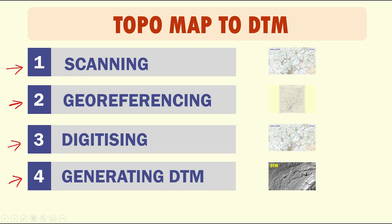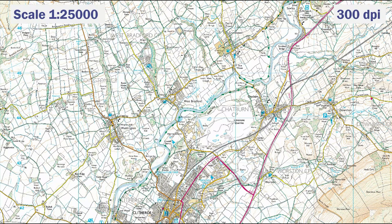To convert the paper map into a digital terrain model, first you need to scan it. This is a paper map that I'm going to use later on for producing a digital terrain model. You need to scan it to a good resolution — I recommend scanning your paper map to 300 dpi (dots per inch). The scale of this map is 1 to 25k, as you can see here.